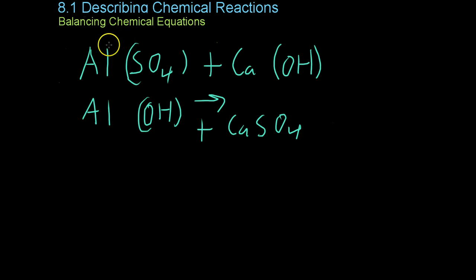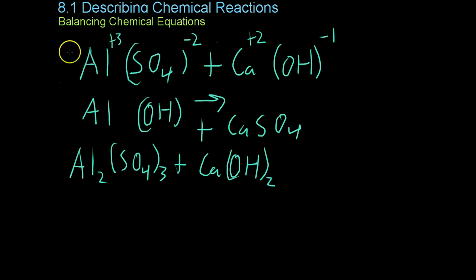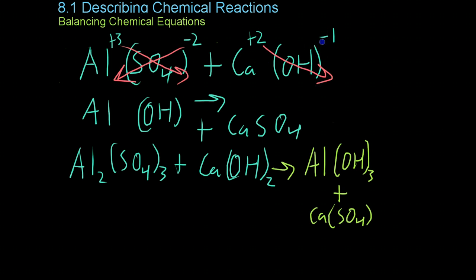Now again, we have to use the charges to get the correct formula on each side. So aluminum has a charge of plus three, sulfate has a charge of minus two, calcium has a charge of plus two, and OH has a charge of negative one. Now when we do all the crossing and whatnot, including for the reactants, we get the chemical equation Al2 with three sulfates and calcium hydroxide yield aluminum hydroxide and calcium sulfate. Again, the way you do this is by crossing over the various oxidation states for each element or polyatomic ion in order to get the correct chemical formula.